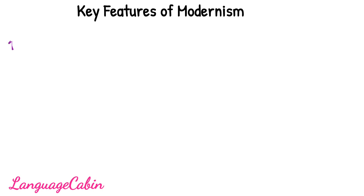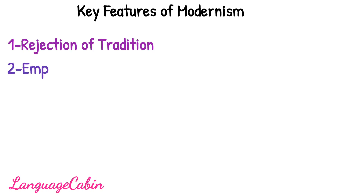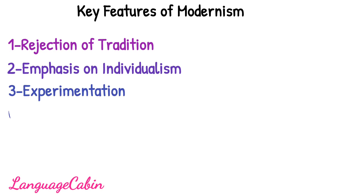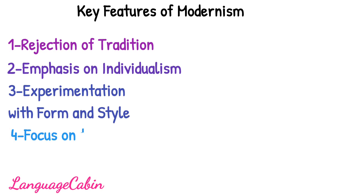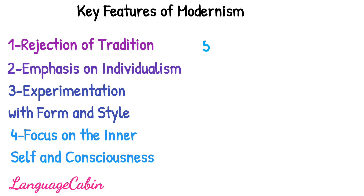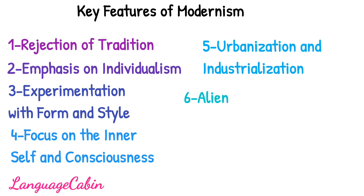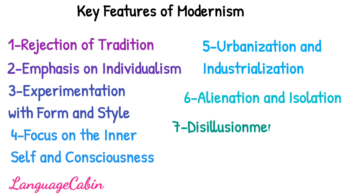Let's have a look at the key features of Modernism. Number 1: Rejection of tradition. 2: Emphasis on individualism. 3: Experimentation with form and style. 4: Focus on the inner self and consciousness. 5: Urbanization and industrialization. 6: Alienation and isolation. 7: Disillusionment and despair. 8: Symbolism and imagery.